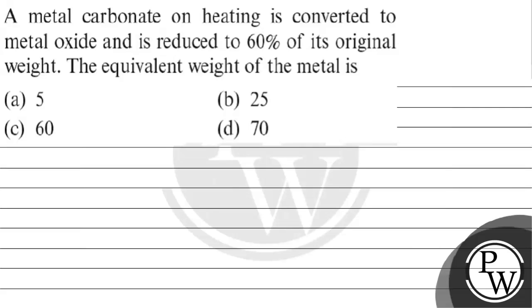Let's read this question. A metal carbonate on heating is converted to metal oxide and is reduced to 60 percent of its original weight. The equivalent weight of the metal is: option A 5, option B 25, option C 60, option D 70.